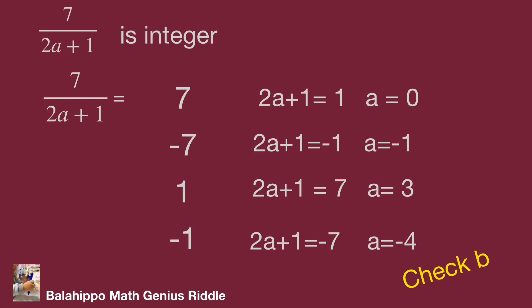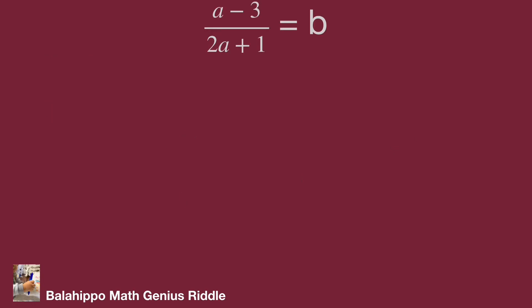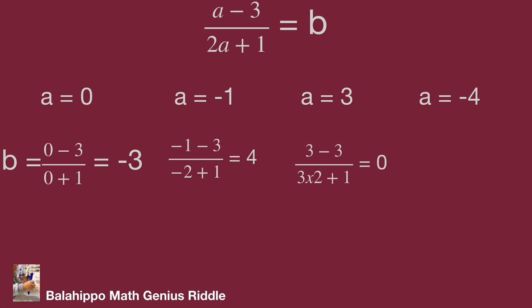Let's check if these values satisfy the definition of b. a minus 3 over 2a plus 1 equals b. Check a equals 0, minus 1, 3, and minus 4. If a equals 0, b equals minus 3. a equals minus 1, b equals 4. a equals 3, b equals 0. And finally, a equals minus 4, b equals minus 1.